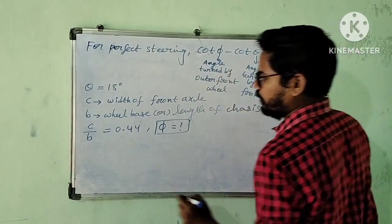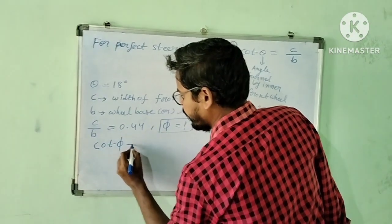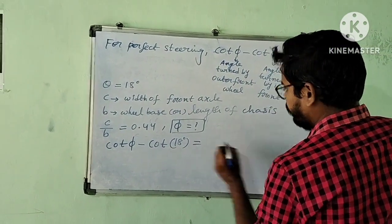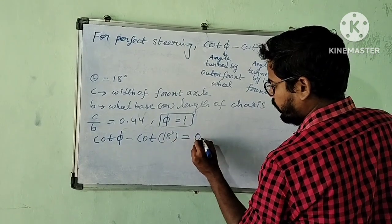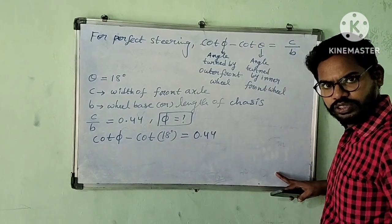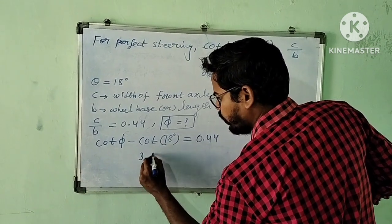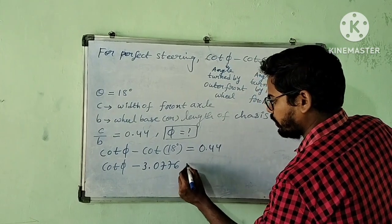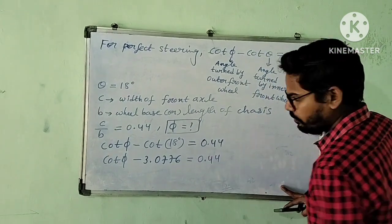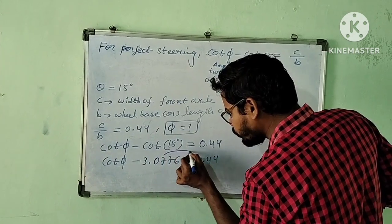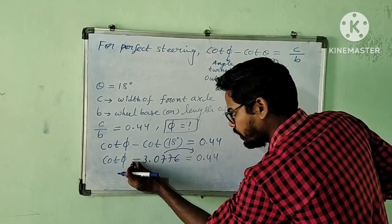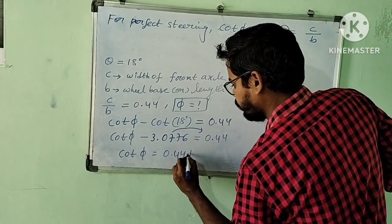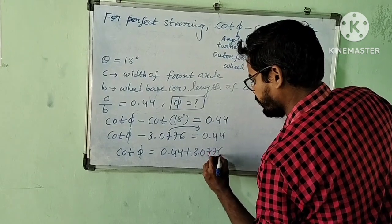Substituting all values into the formula: cot φ minus cot 18 degrees equals 0.44. Using a scientific calculator, cot 18 degrees is approximately 3.0776. So, cot φ minus 3.0776 equals 0.44. Transposing, cot φ equals 0.44 plus 3.0776.